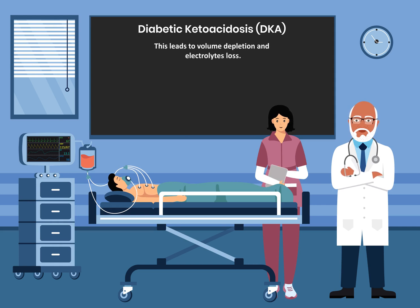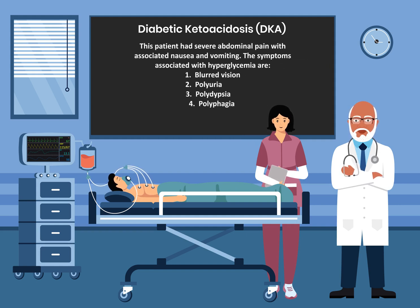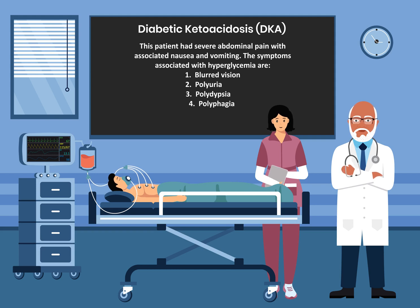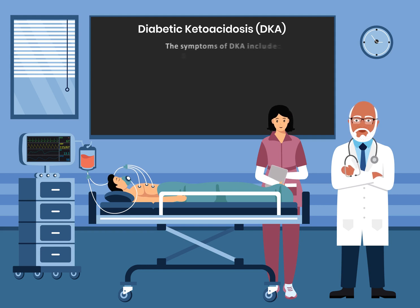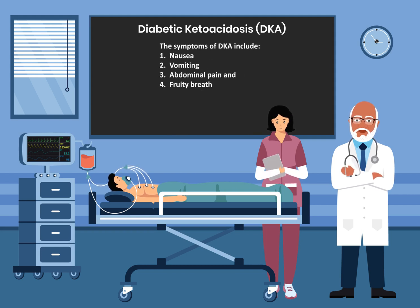Please note that hyperglycemia and ketoacidosis both cause hyperosmolar states and osmotic diuresis. This leads to volume depletion and electrolyte loss. This patient has severe abdominal pain with associated nausea and vomiting. The symptoms associated with hyperglycemia are blurred vision, polyuria, polydipsia, and polyphagia. The symptoms of DKA include nausea, vomiting, abdominal pain, and fruity breath.